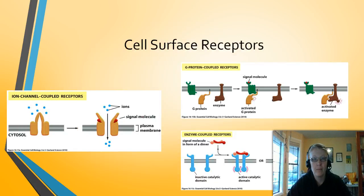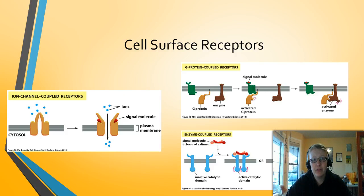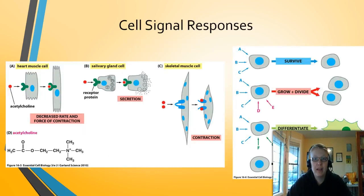Now let's talk about how signals are received. We have three main types of cell surface receptors in this chapter. The first is ion channel-coupled receptors, which we covered extensively in unit 3 — please review those if needed. The other two are G-protein coupled receptors (GPCRs) and enzyme-coupled receptors. GPCRs are covered in topic 2 and enzyme-coupled receptors in topic 3, so be aware of them now so you are prepared when we get to those topics.